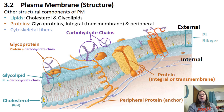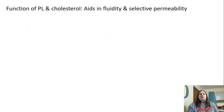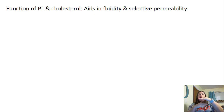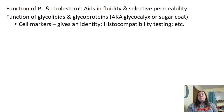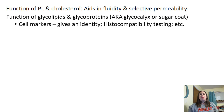The function of phospholipids and cholesterol is to add fluidity to the membrane and to create a selective barrier — only certain things can move across the lipid layer. The function of glycolipids and glycoproteins is for cell markers, giving cells a certain identity called histocompatibility. When someone needs a tissue or organ transplant and they talk about a match, they are looking at the markers on cells to see if the body would reject or accept it. These are cell markers unique to you.